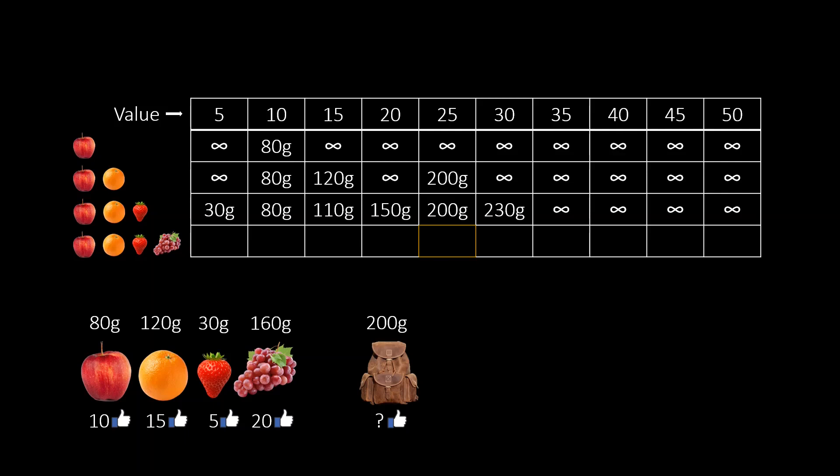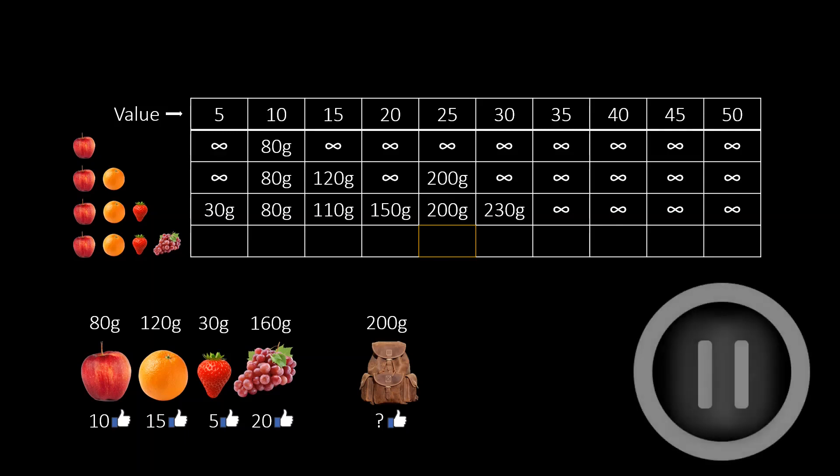Let's explain this in detail with an example. Some rows have already been filled into the table. Using these, we now want to compute the entry highlighted here in yellow. In other words, we want to find the lightest subset of value 25 using all four fruits. How would you do this? Pause the video to think about this for a moment.